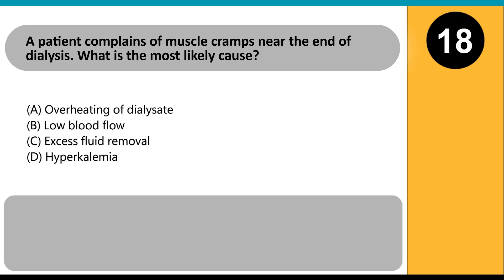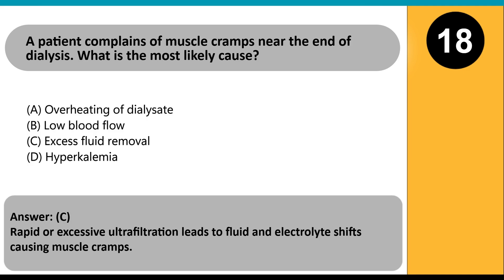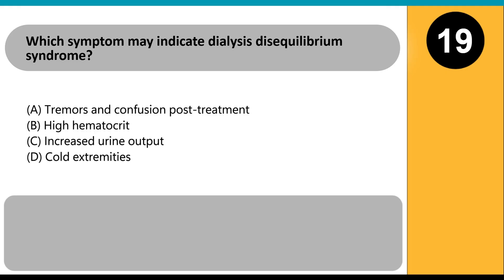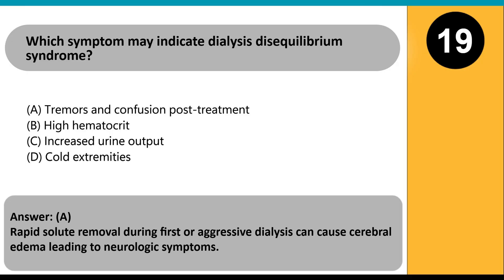A patient complains of muscle cramps near the end of dialysis. What is the most likely cause? A. Overheating of dialysate. B. Low blood flow. C. Excess fluid removal. D. Hyperkalemia. Answer C. Rapid or excessive ultrafiltration leads to fluid and electrolyte shifts causing muscle cramps. Which symptom may indicate dialysis disequilibrium syndrome? A. Tremors and confusion post-treatment. B. High hematocrit. C. Increased urine output. D. Cold extremities. Answer A. Rapid solute removal during first or aggressive dialysis can cause cerebral edema leading to neurologic symptoms.